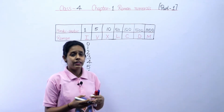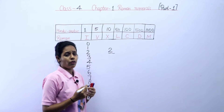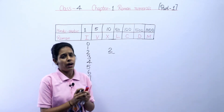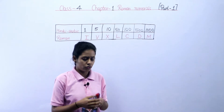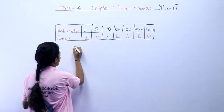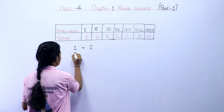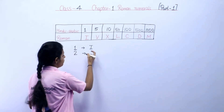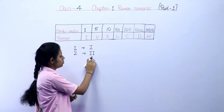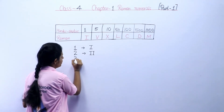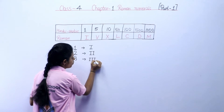Now, how can they write the remaining numbers? Like if they want to write 2, how can they write number 2? For remaining numbers, they use the pattern of repeating. So 1 is I. If we write 2, we repeat I — 1 and 1. This is how they write 2. Then 3 — I repeated 3 times.